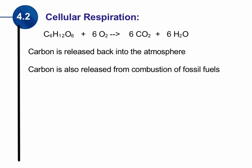Carbon is also released into the atmosphere through the combustion — the burning — of fossil fuels. If it were just cellular respiration, we could maintain that balance. But it's the consumption of fossil fuels, this excess carbon being released into the atmosphere, that is causing many problems with climate change and high levels of carbon dioxide. This problem is further worsened if we remove trees and plants, because there are fewer plants to take in that carbon dioxide and it builds up.